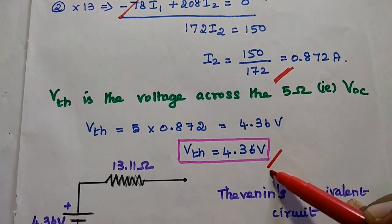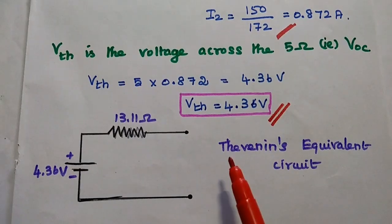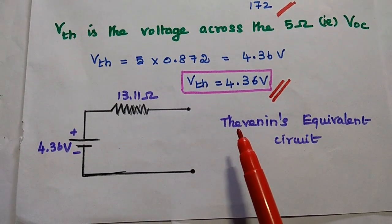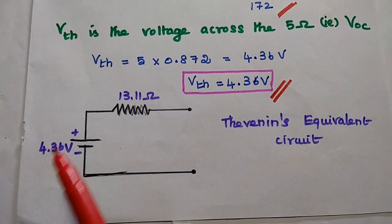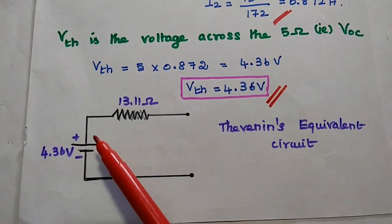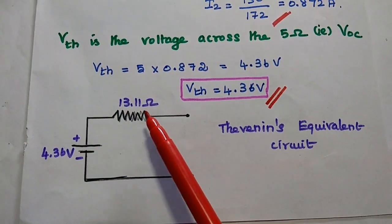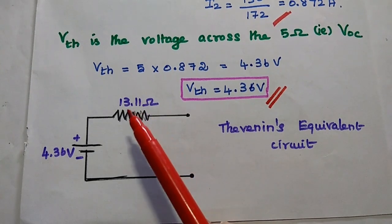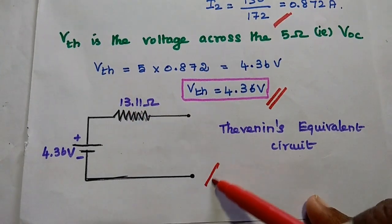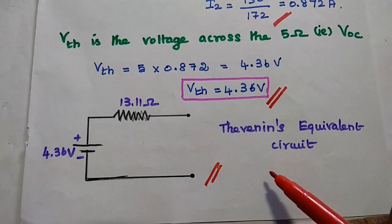So next we draw the Thevenin's equivalent circuit. The Thevenin's voltage is 4.36 V in series with Thevenin's resistance 13.11 ohm. This is the answer for the first problem.